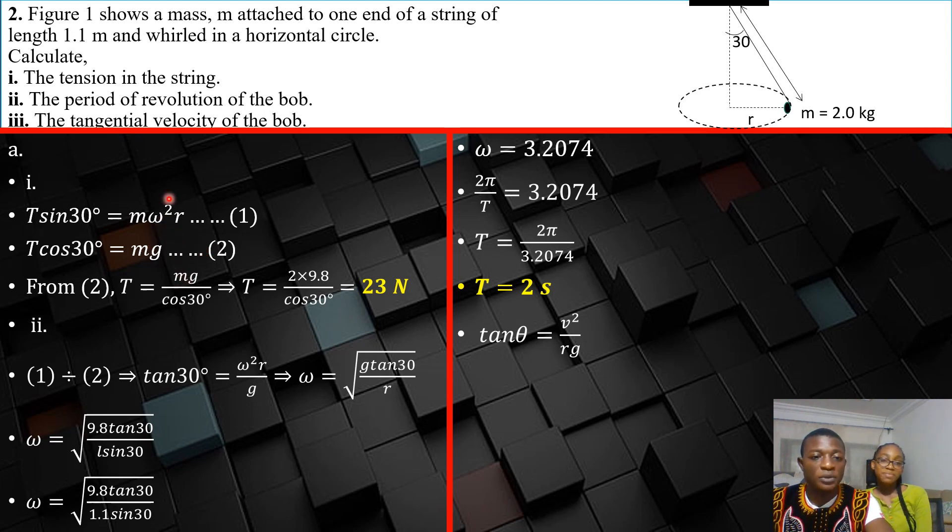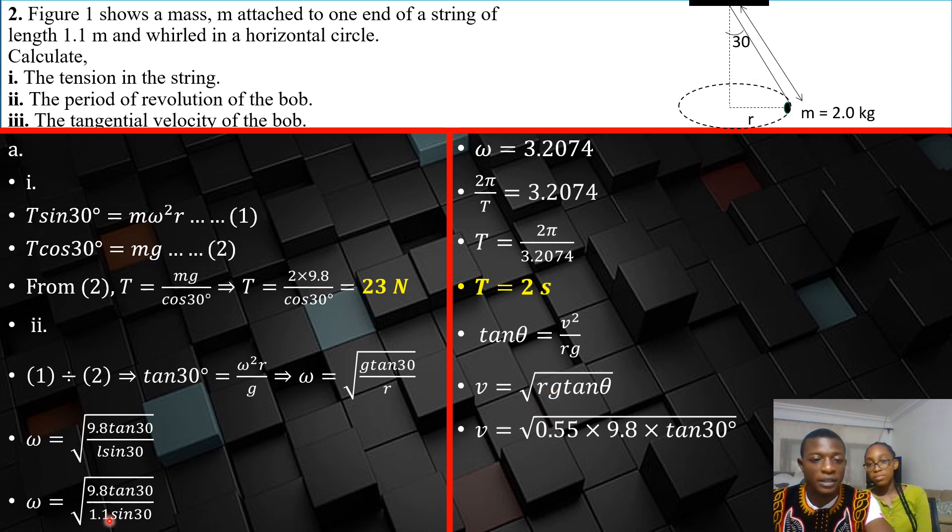So when we ratio those two, we're going to get tan theta equals v squared over rg. We can make v the subject from here because that is the tangential velocity of the bob. So substitute what r is. Remember r is L sin 30, and we already got it from here.